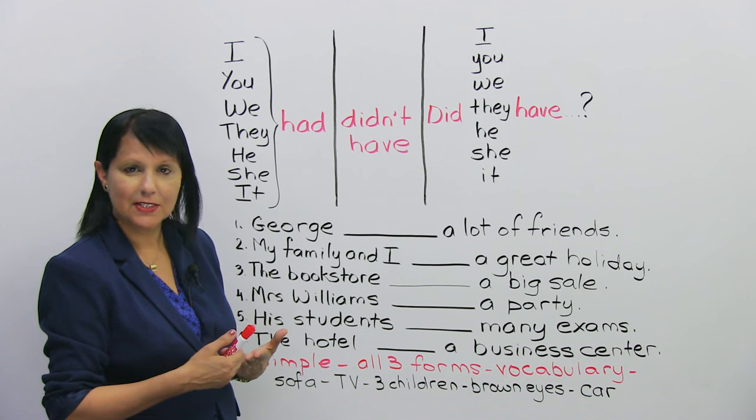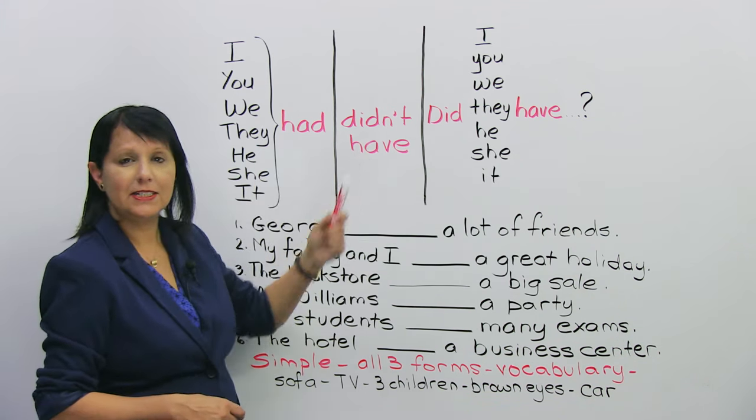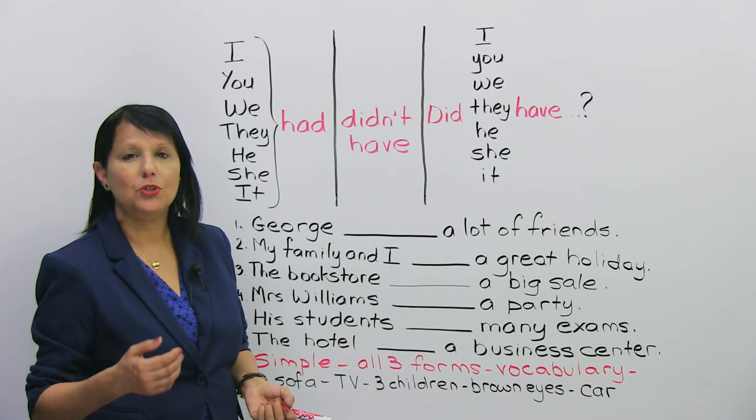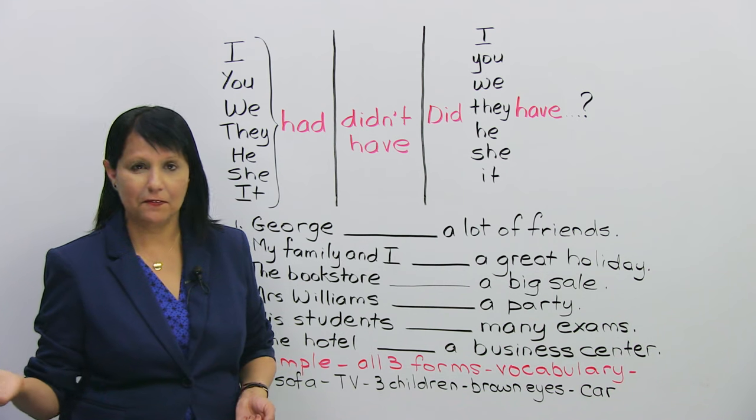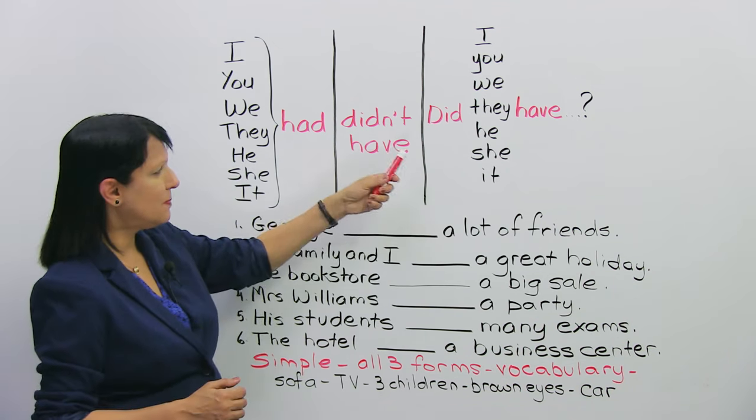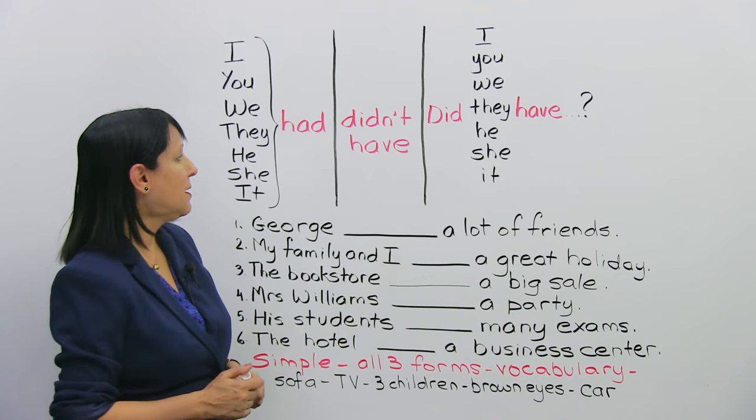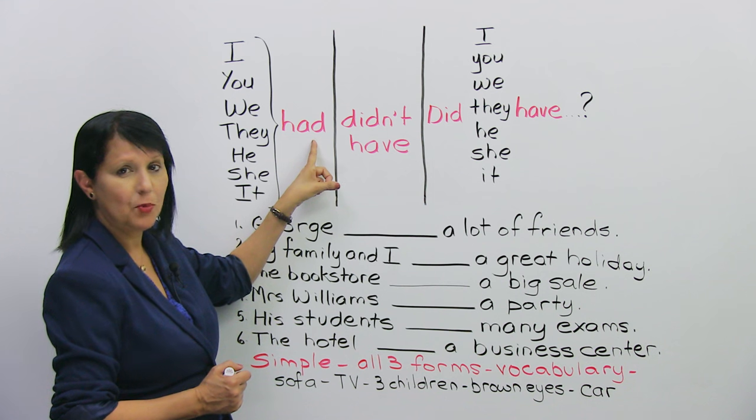So, if you want to make a negative sentence, then we simply say, I didn't have fun. You didn't have fun, you didn't have fun, we didn't have fun, they didn't have fun. You see, it's basically saying the same, but we're using have, we're not using had anymore. Okay?